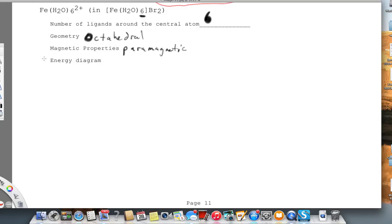And so then we want to draw the energy diagram. So first, we're going to have iron 2+. Here's the 3d. And then we've got 4s.